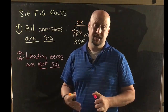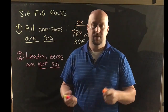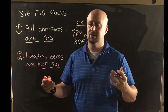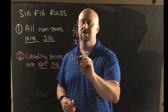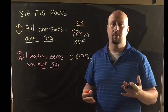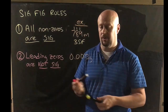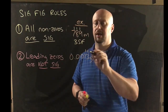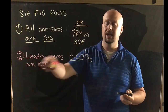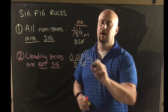Rule number two: leading zeros — zeros at the beginning of a number — are not significant, ever. They're basically there as placeholders. So if I had a number like 0.0023 grams, the two and the three are non-zeros, so those are significant. But the zeros at the front are leading zeros, so they do not count. That means for this number, I've got two sig figs.